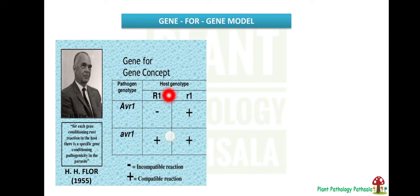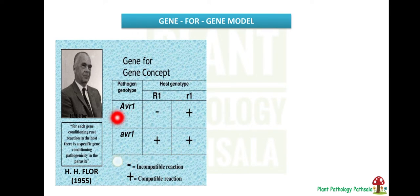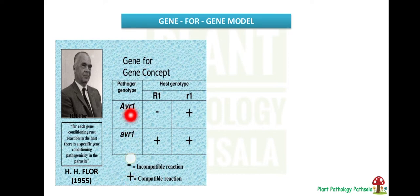In this table, capital R means a functional resistance gene is present in the plant, whereas small or recessive R means a functional resistance gene is not present. Capital or dominant AVR means the pathogen has an avirulence gene, whereas small or recessive AVR means the pathogen is virulent.